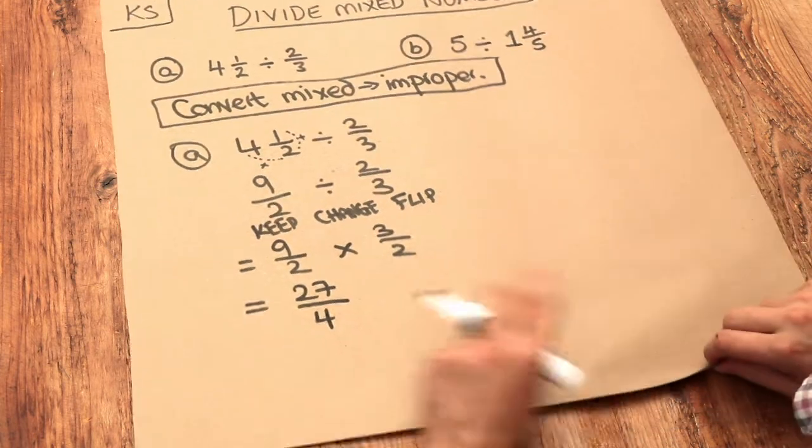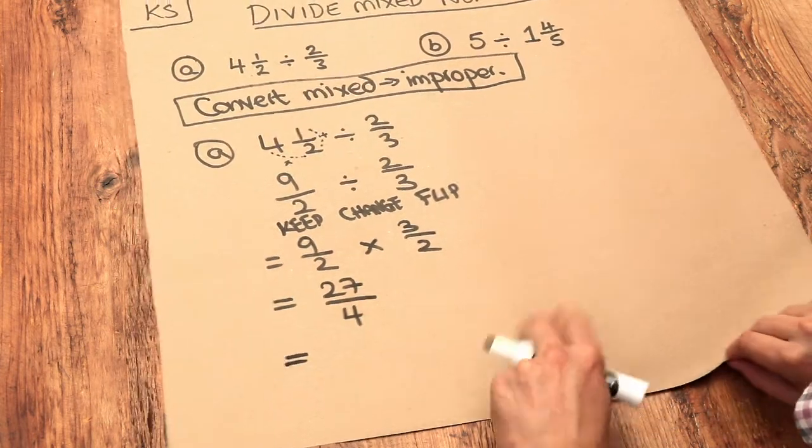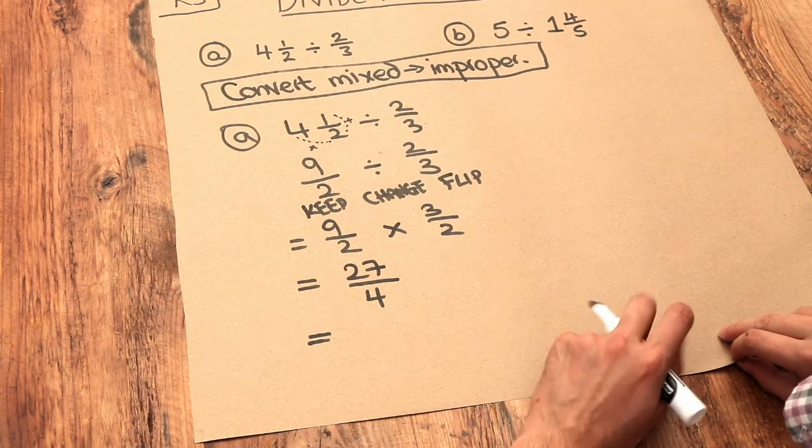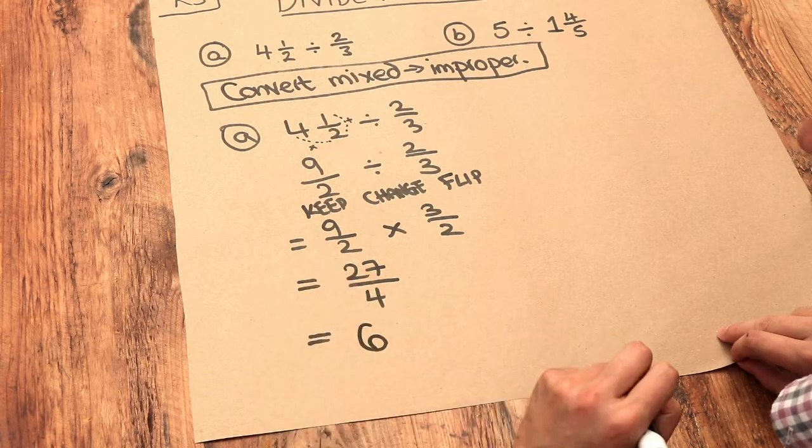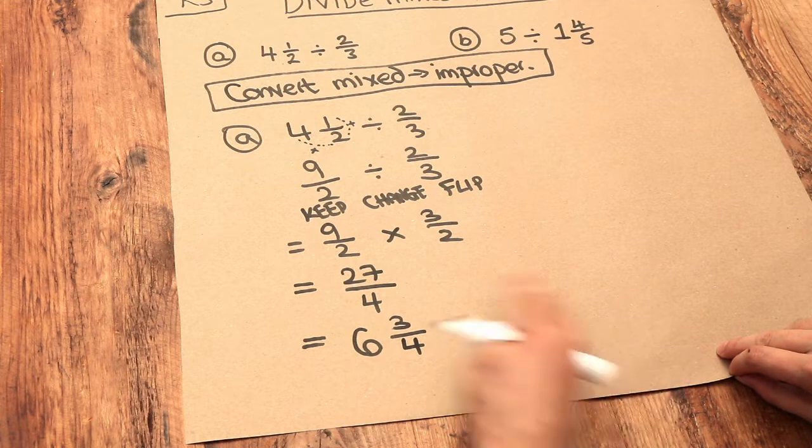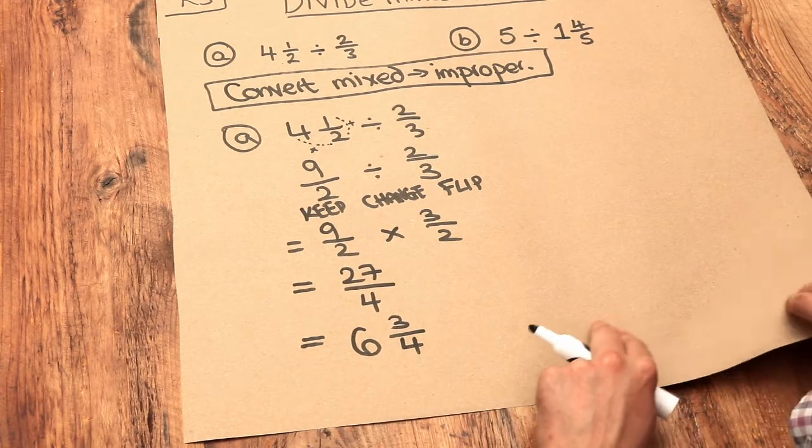And if we wanted to we could convert this to a mixed number. So we say how many times does 4 go into 27? It goes in 6 whole times and we have a remainder of 3, so we do 6 and 3 over that denominator there. And I explore that conversion process in a separate video.